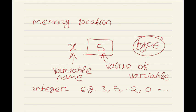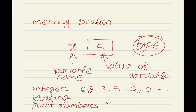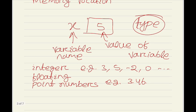Another type of variable holds floating point numbers, for example 3.46, 7.5, 2.41 like this. So these are the numbers with a decimal point, such as 3.46, 7.5, 2.41, or similarly 12.59 like this.